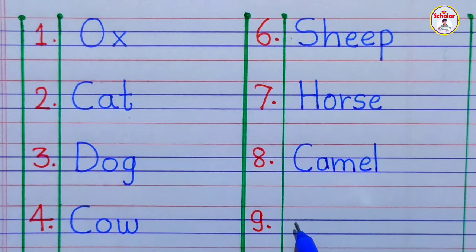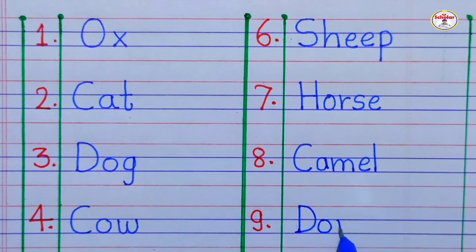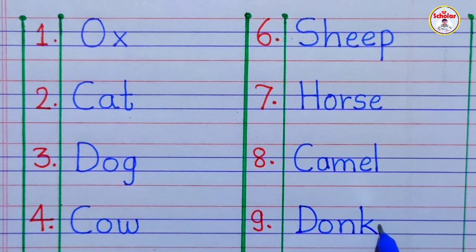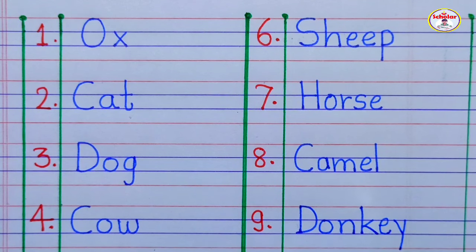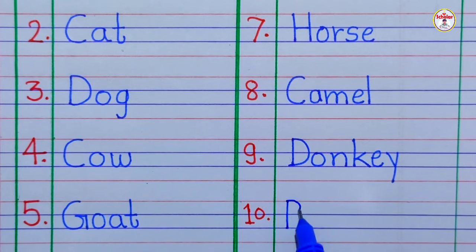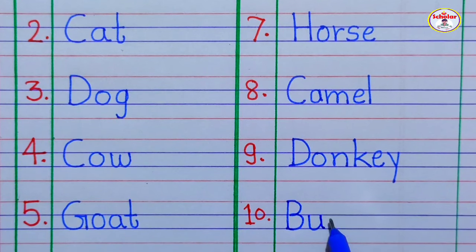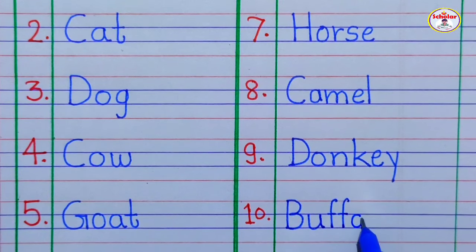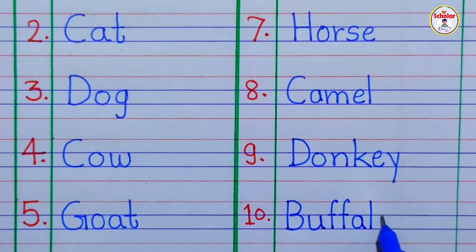d, o, n, k, e, y — donkey. Last animal name is b, u, double f, a, l, o — buffalo.